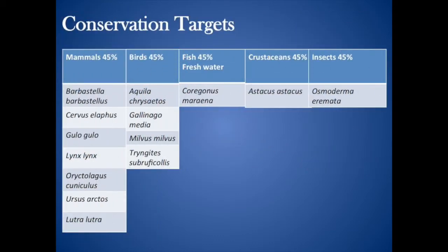Sweden is host to an estimated 50,000 species of animals and plants. This number represents 32% of the total species described for Europe and could represent more than 3% of the species in the world. Approximately 16% of the species assessed by the European red list of species are present in Sweden. Of the total number of species assessed in the country, 3% are considered threatened and at least 7% are near-threatened at European level.